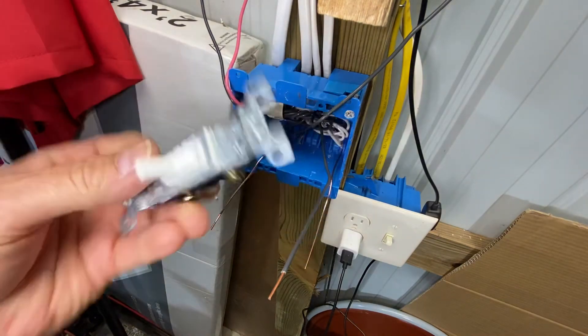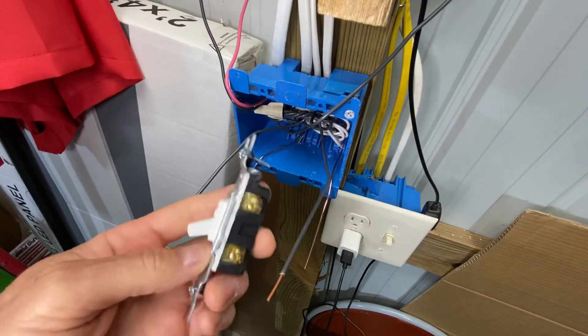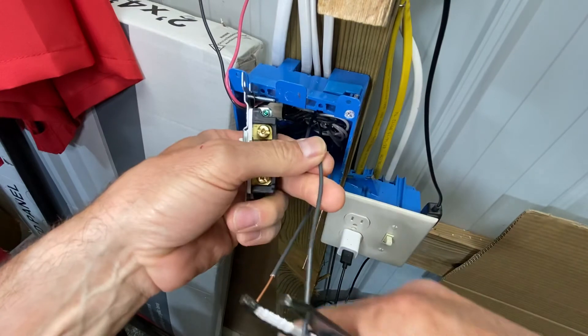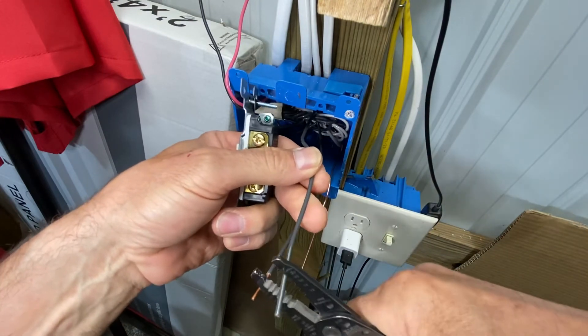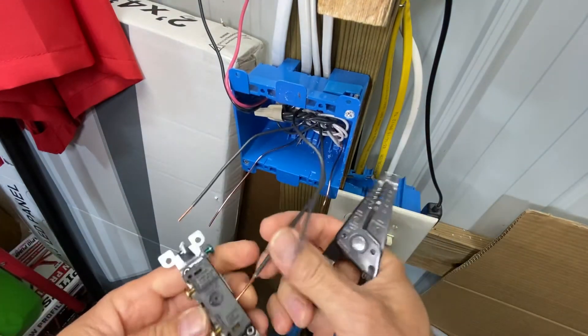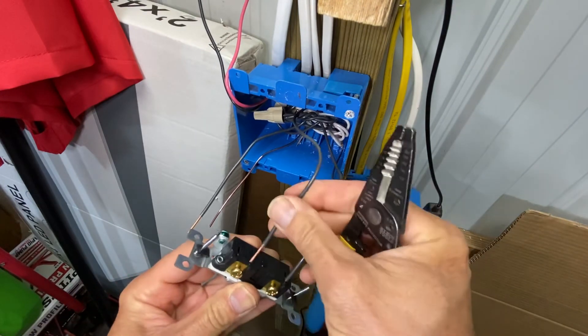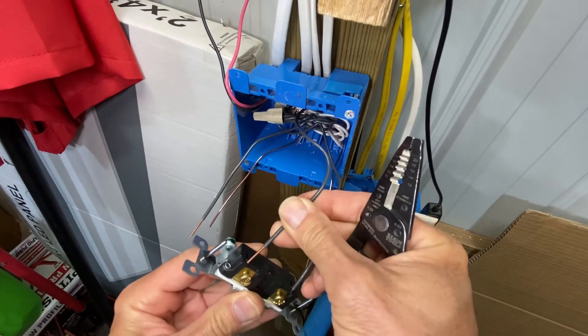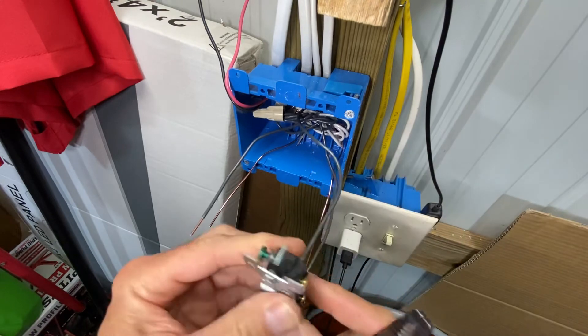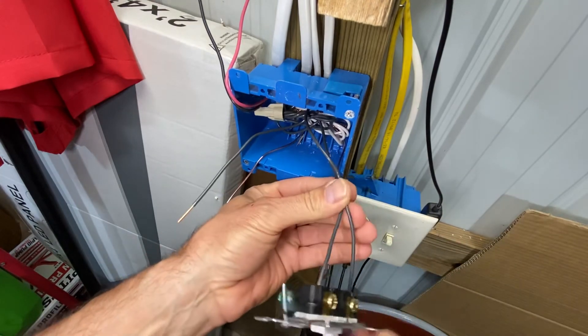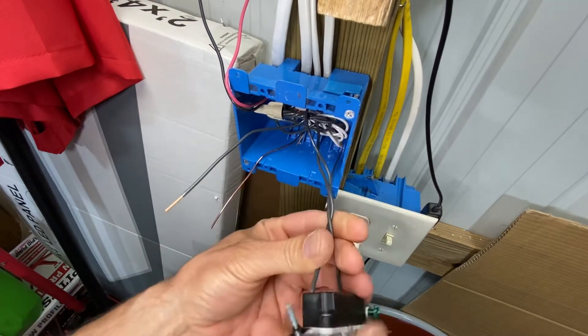Single pole switch. Two screws. Two wires. A little simple, right? If you like to plug them in the back, you can plug them in the back. Come on. And, then I like to give them a little twist. Hold the wires together.